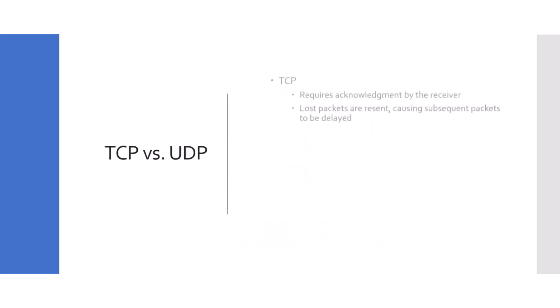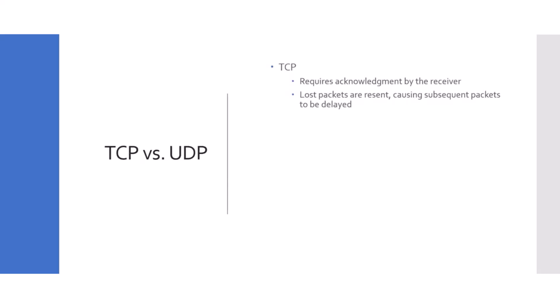Now let's look at what packets we are sending in the Teams environment. TCP — Transmission Control Protocol — requires acknowledgement by the receiver. The sender sends a packet and the receiver has to acknowledge that it received the packet. Lost packets are retransmitted, causing subsequent packets to be delayed because the sender has to wait for the acknowledgement from the receiver before sending other packets. TCP is a connection-oriented protocol.